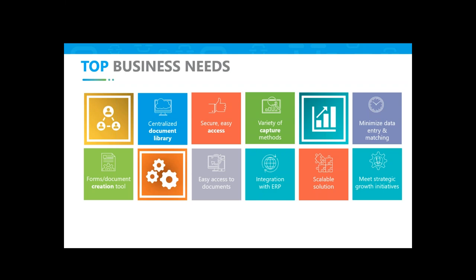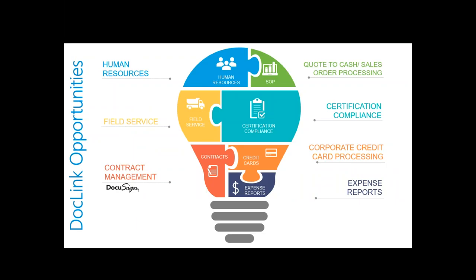A solution that is scalable — you want to start small, get your toes wet, and then expand enterprise-wide and go paperless enterprise-wide. The big advantage to DocLink is you can start in one area, and most of the time it starts with the AP side or sales order processing side. But once you own the system, once you go paperless, the other departments are going to see how efficient you are, how fast you're able to access information, how secure it is — and they're going to want to go paperless as well.